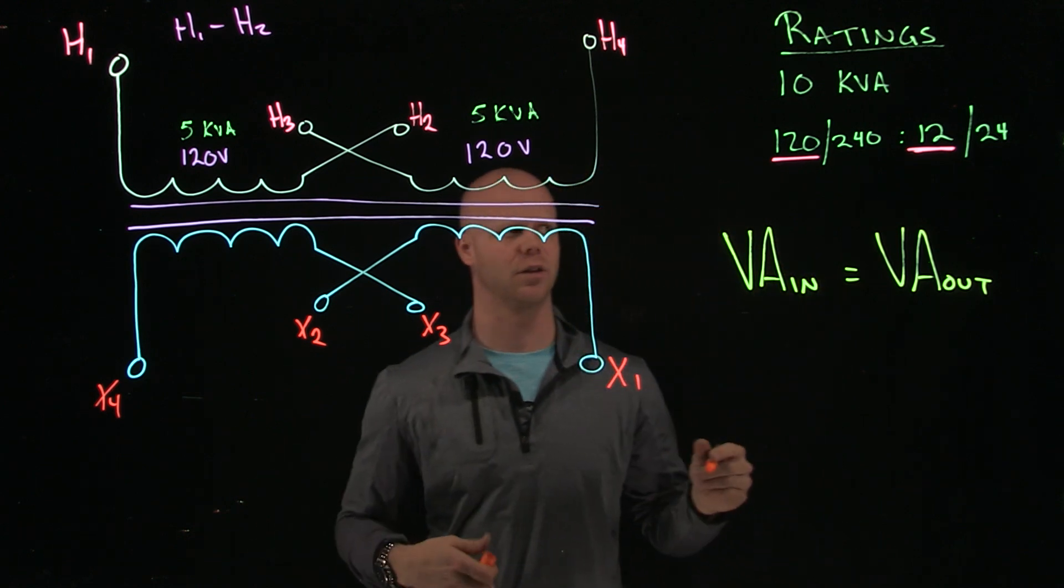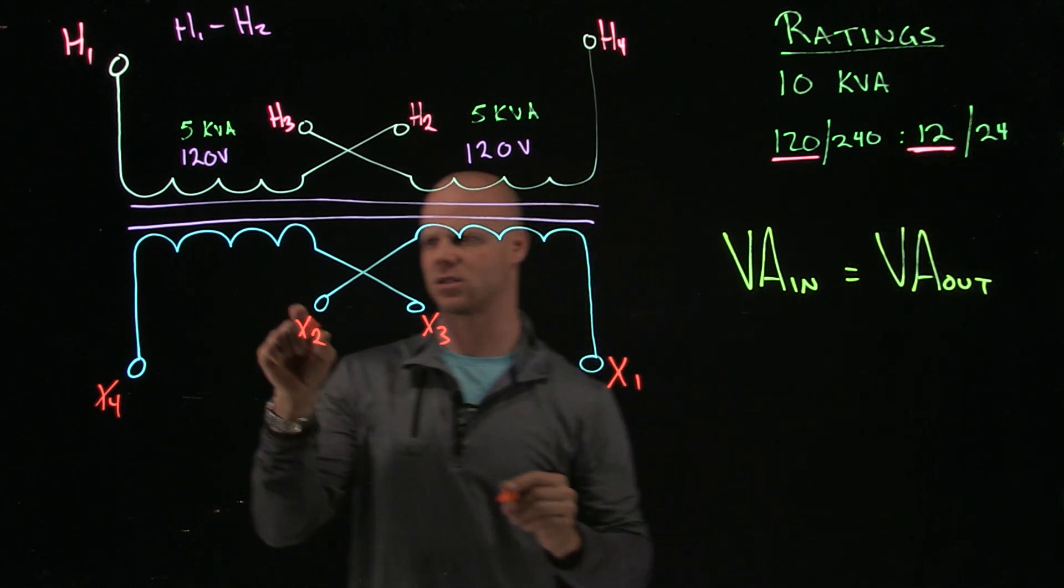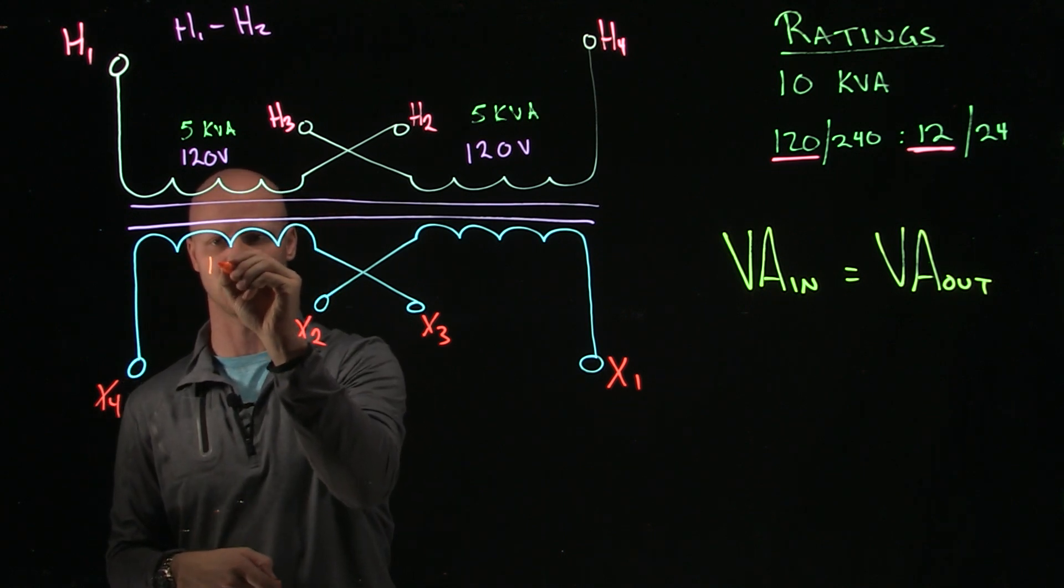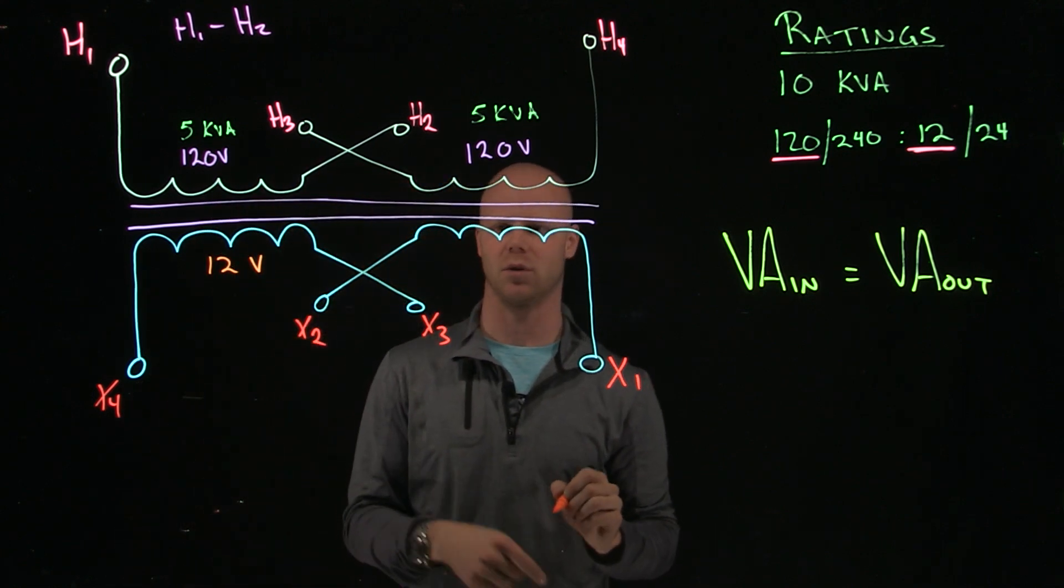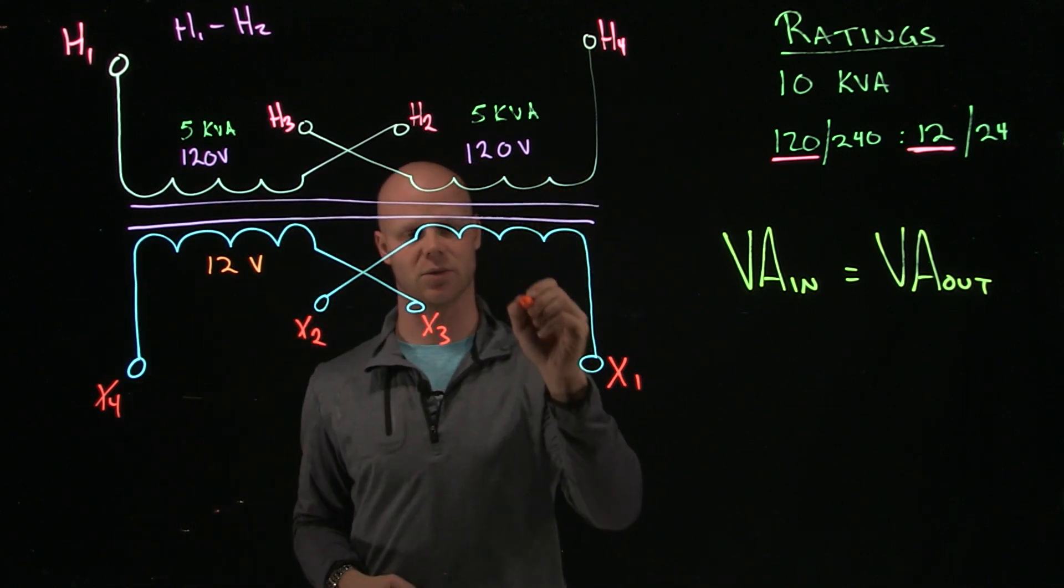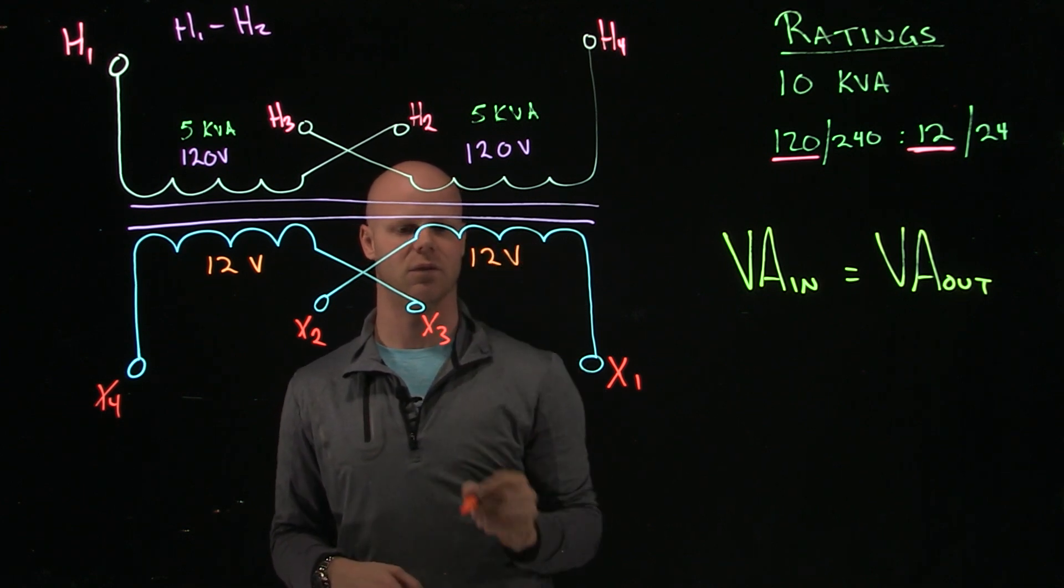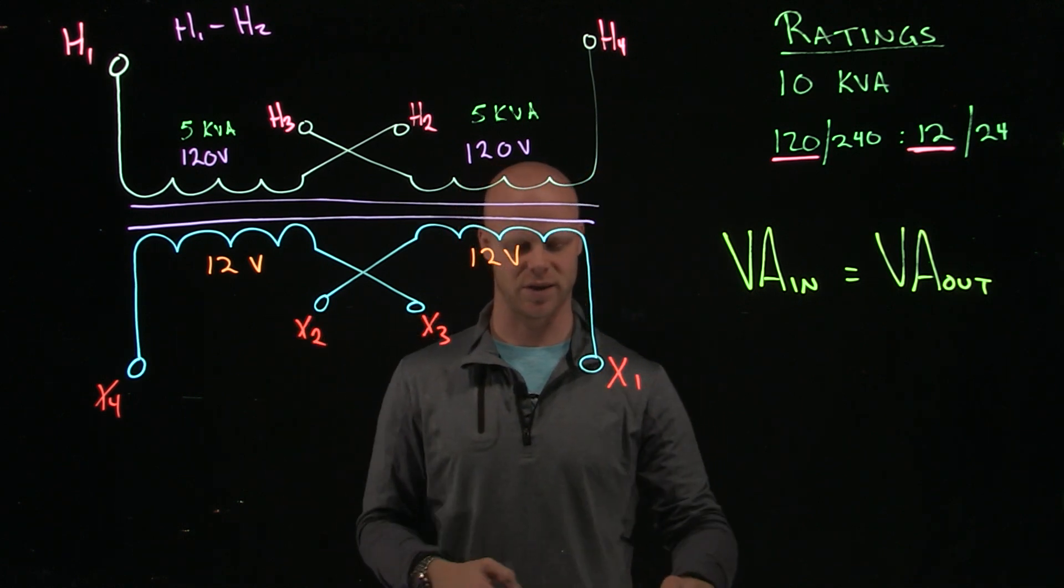Secondary side, we're going to follow that exact same principle. This lower voltage on that multiple rating is going to be the rating of one of these windings. So this one winding will have a 12 volt rating. This winding is going to be physically identical, electrically identical. This will have a 12 volt rating. I can have a choice. I can wire these in series. I can wire them in parallel.